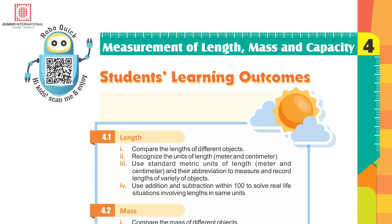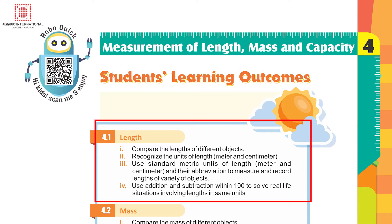Mathematics Success Book 2, Chapter 4: Measurement of Length, Mass and Capacity. Students' learning outcomes: after completing this unit you will be able to compare the lengths of different objects, recognize the units of length — meter and centimeter, use standard metric units of length.